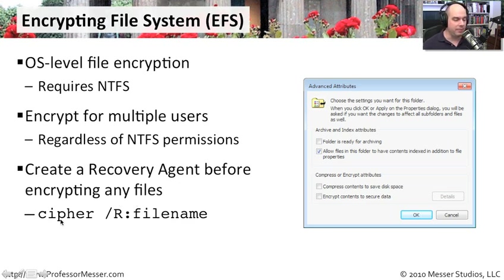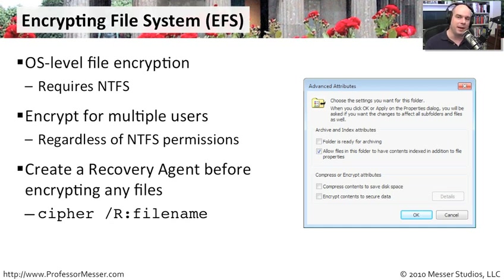You create a recovery agent by using the command cipher /r: followed by the file name you would like to use. Let's look at how we might encrypt files in the operating system and run that cipher command to make sure we don't lose any encrypted files.